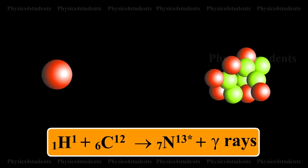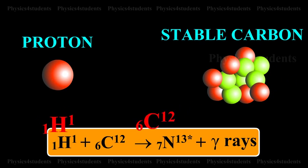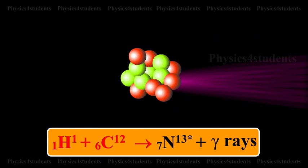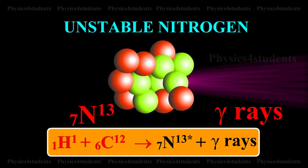A proton combines with a stable carbon producing unstable nitrogen, with the release of gamma rays.